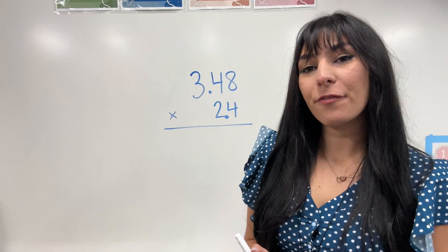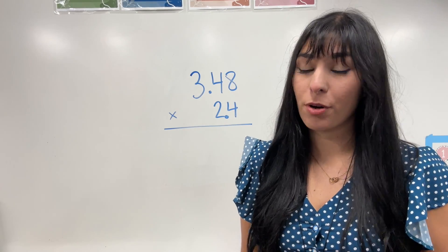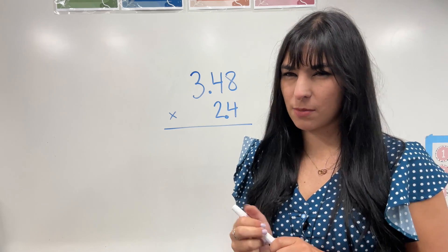Let me show you what I'm talking about. For the first problem, I have 3.48 times 2.4. Step one, we're going to multiply like normal, ignoring those decimals.